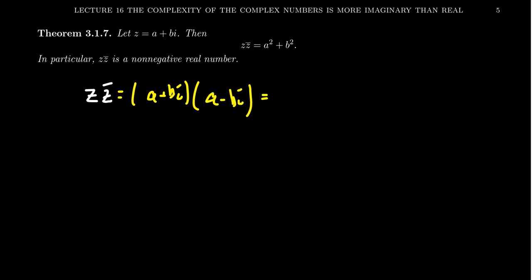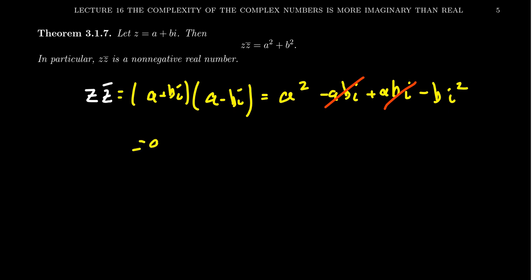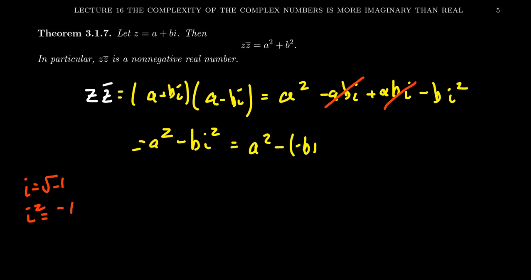If we FOIL this out by the rules of complex multiplication, you're going to get a squared minus abi, then plus abi, and then minus b squared i squared. You'll notice that the negative abi and plus abi cancel out, giving you a squared minus b squared i squared. Since i squared equals negative one, this expression becomes a squared plus b squared. So when you multiply a complex number by its conjugate, you always get a sum of squares — a real number.